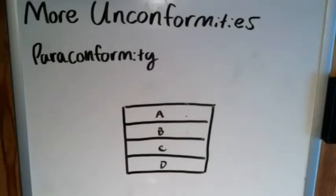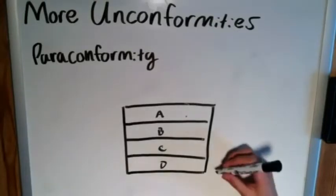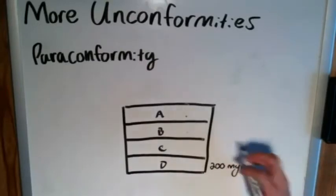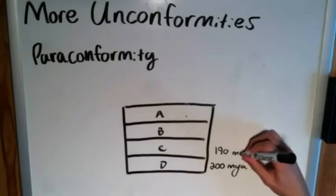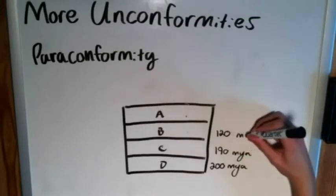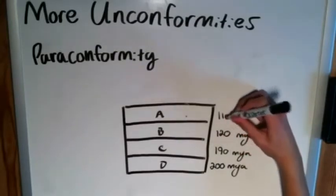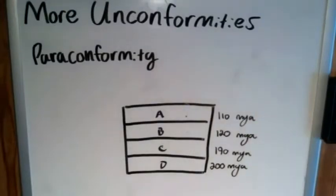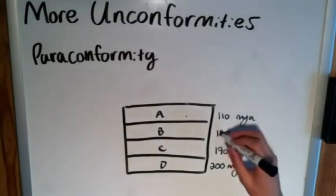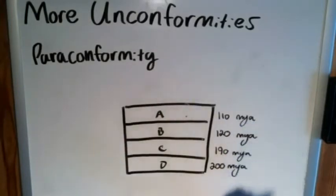You can identify a paraconformity by dating the rocks. Let's say layer D is from 200 million years ago, C is from 190 million years ago, B is from 120 million years ago, and A is from 110 million years ago. For the most part we've got a consistent pattern of 10 million years between each stratum — except between B and C, where we jump from 190 to 120 million years.